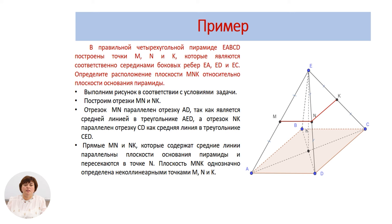Прямые MN и NK, которые содержат средние линии, параллельны плоскости основания пирамиды и пересекаются в точке N. Плоскость MNK однозначно определена неколлинеарными точками M, N и K. Следовательно, плоскость MNK параллельна плоскости основания пирамиды.